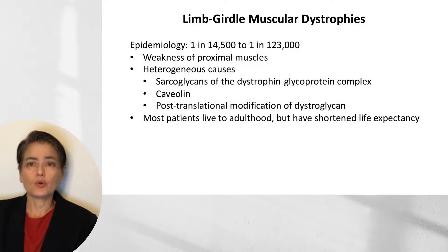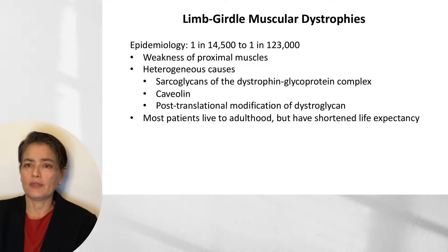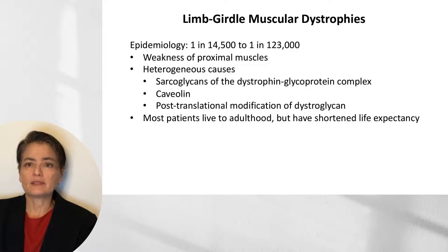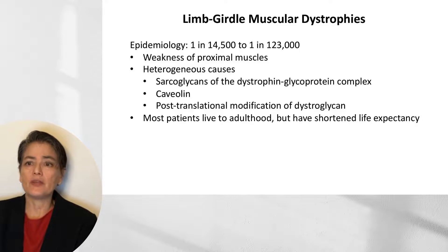The limb girdle muscular dystrophies are a group of diseases with incidence ranging from 1 in 14,500 to 1 in 123,000, making them fairly uncommon. They involve weakness of proximal muscles due to heterogeneous causes, including involvement of sarcoglycans of the dystrophin glycoprotein complex, caveolin, and defects in post-translational modification of dystroglycan. The muscles affected are the proximal muscles of the extremities and trunk. Most patients live to adulthood but have a shortened life expectancy.